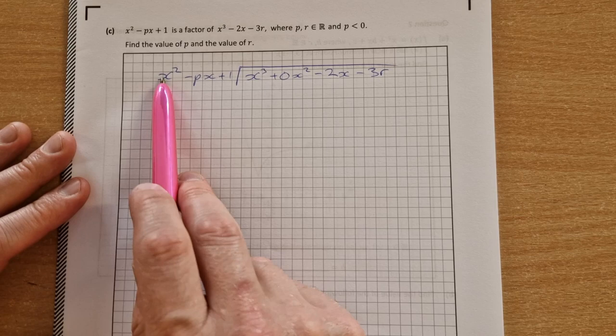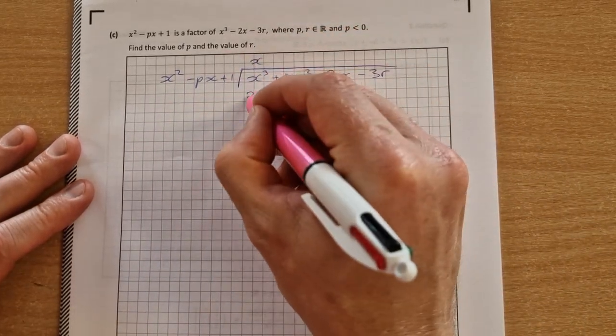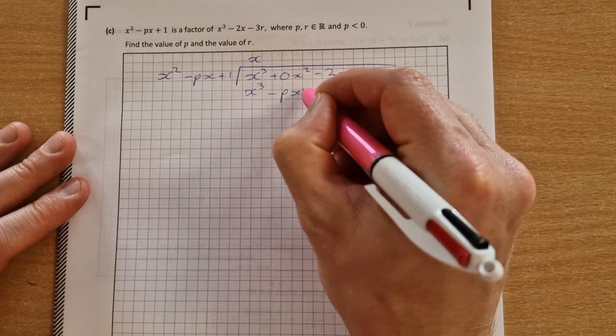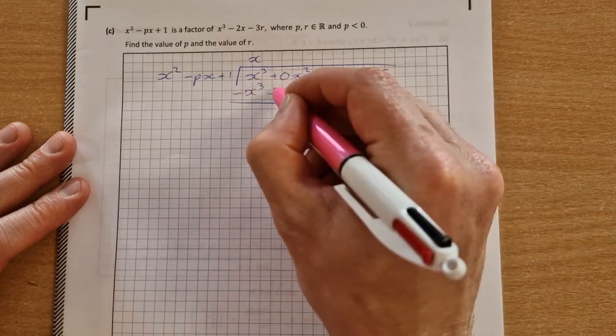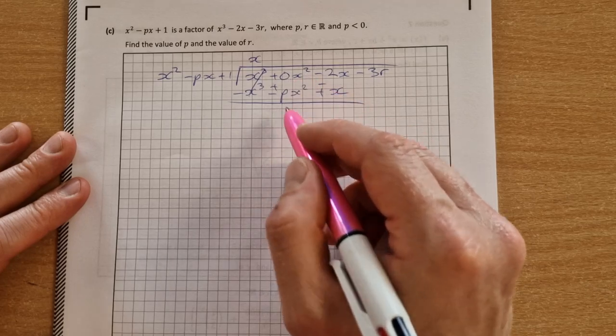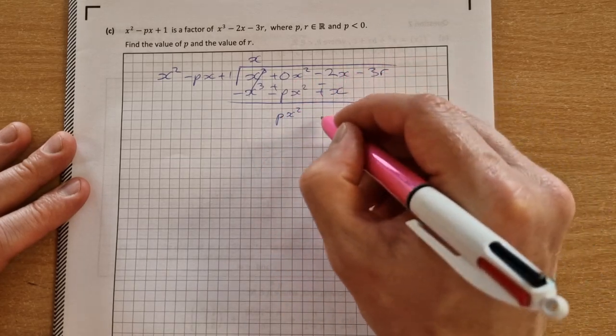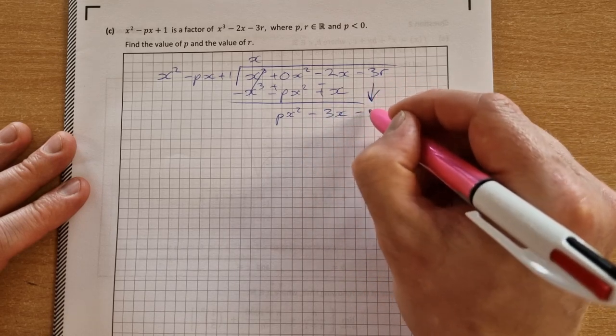So we'll do our long division. x squared into x cubed goes x times, multiply down, you're going to get x cubed minus px squared plus x, change the sign of everything, they cancel. 0x squared plus px squared is px squared, minus 2x minus x is minus 3x, and then we bring down our minus 3r.